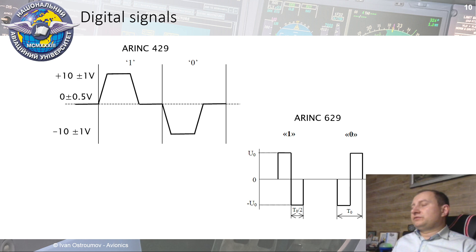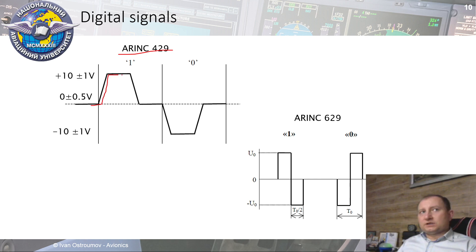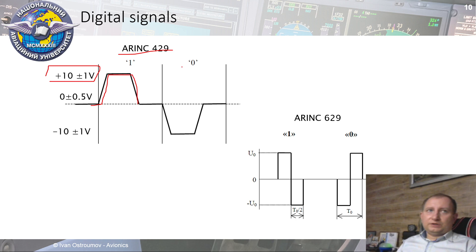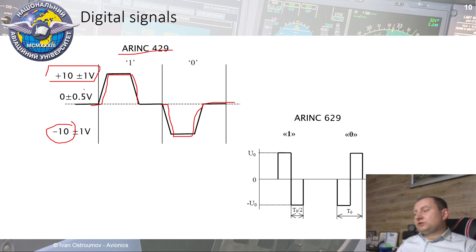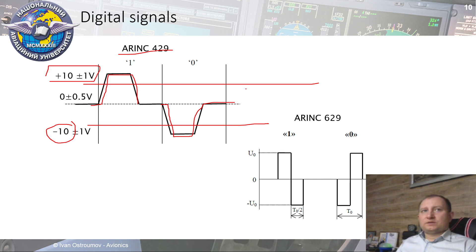For example, in the case of the ARINC 429 digital data bus, for transferring a logical one we use a positive pulse with a positive amplitude, usually equal to plus 10 volts. If we want to transfer a zero, it is a negative pulse with amplitude minus 10 volts. Therefore a detector can easily detect a logical one or logical zero because the receiver structure uses a simple threshold value: if the positive threshold is crossed it is a logical one, if the negative threshold is crossed it is a logical zero.